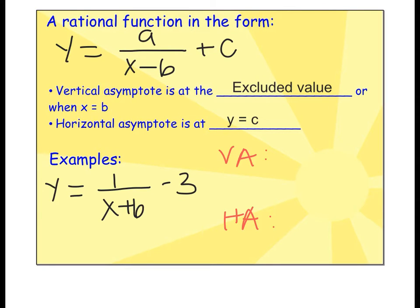A rational function has the general form y equals a divided by x minus b plus c, where a, b, and c are constants. You have two types of asymptotes: a vertical asymptote, which goes up and down, is found at the excluded value when x equals b. A horizontal asymptote is found where y equals c.